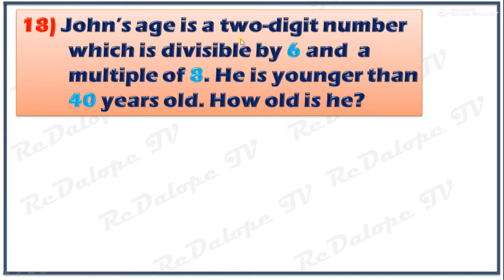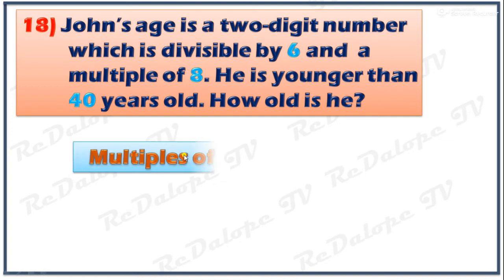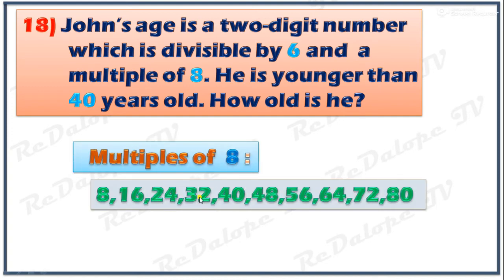John's age is a 2-digit number divisible by 6 and a multiple of 8. He is younger than 40 years old. Listing down the multiples of 8 less than 40: 8, 16, 24, 32. From these numbers, which is exactly divisible by 6? The answer is 24. So the final answer is 24.